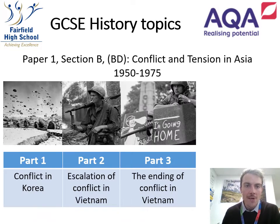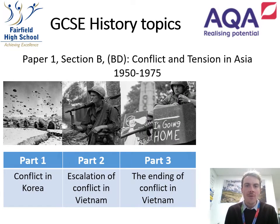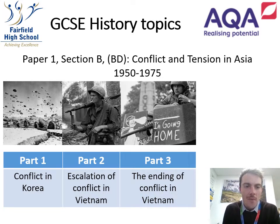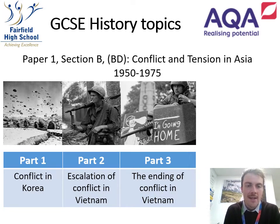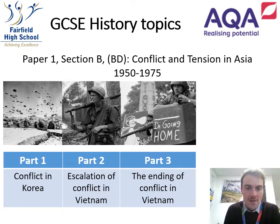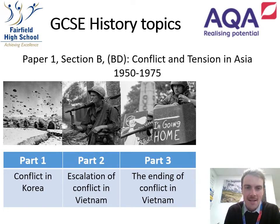We then zoom out and look at America's relationship with communism around the world during the Cold War. We examine one very short conflict — the war in Korea — and then a much longer conflict in Vietnam, with two parts on the Vietnam War. It's as much about the people and American society as it is about the war itself.